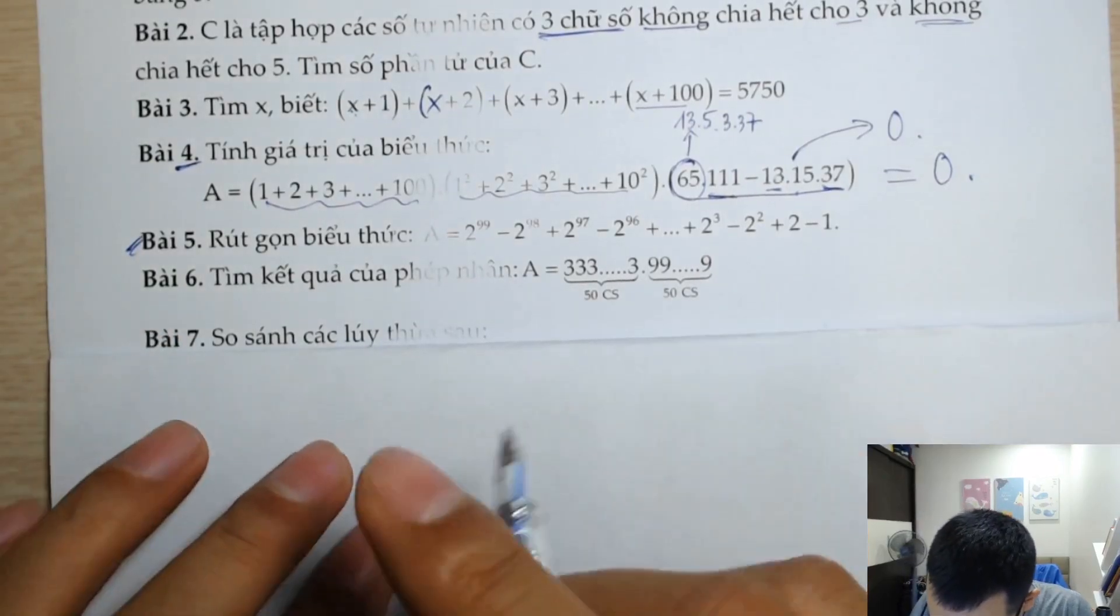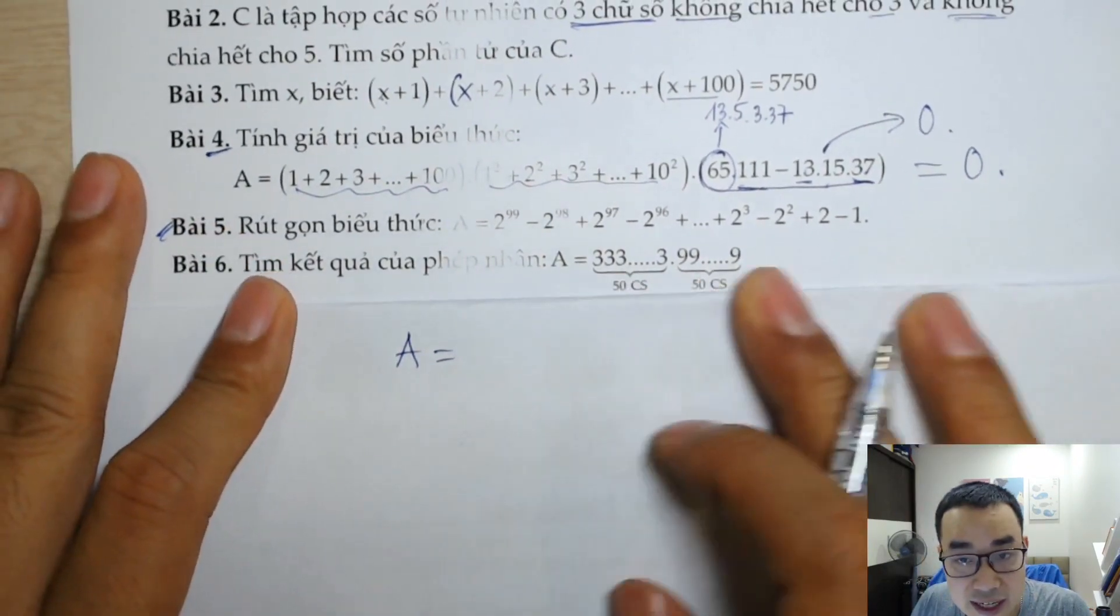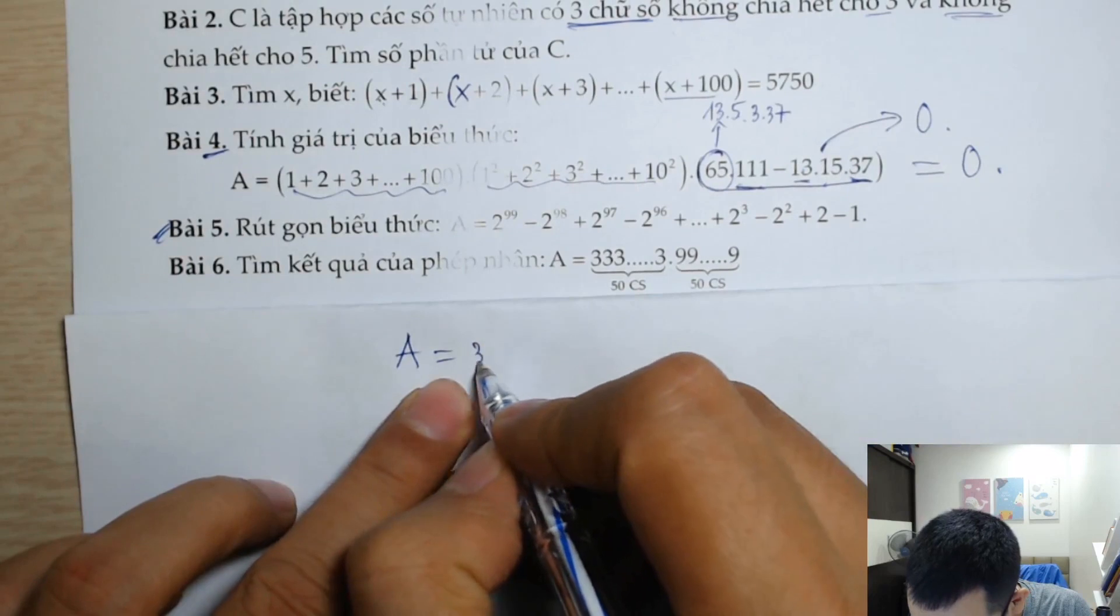Bài số 6 chúng ta thấy nhé, cái biểu thức này, A bằng, thực ra đây là cái dạng mà người ta hỏi chúng ta xem chúng ta có biết cách tính nhanh hay không thôi.